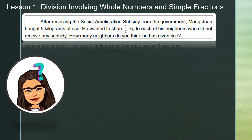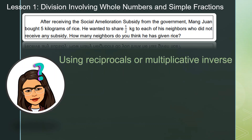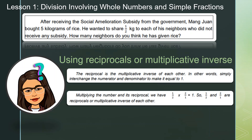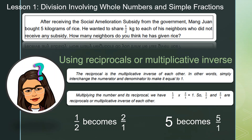Is there a way of solving this without using the block model approach? Of course — we have a method called reciprocals, or multiplicative inverse. The reciprocal is the multiplicative inverse of each other; simply interchange the numerator and denominator to make it equal to one. When you multiply reciprocals together, the answer will be equal to one. So one half will become two over one, and five will be equal to five over one.